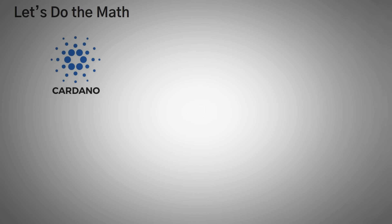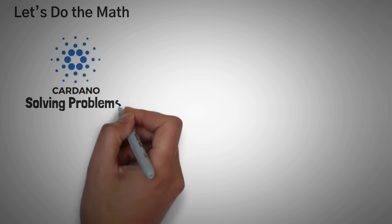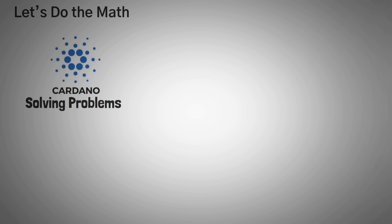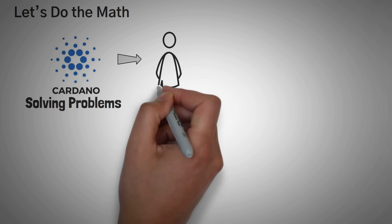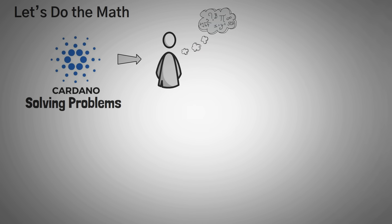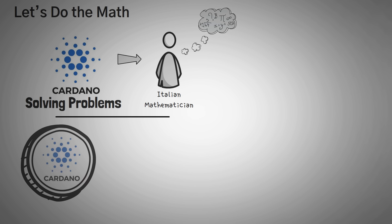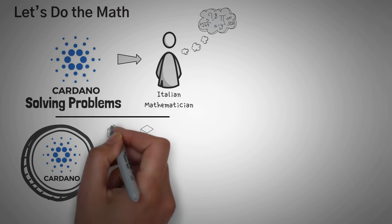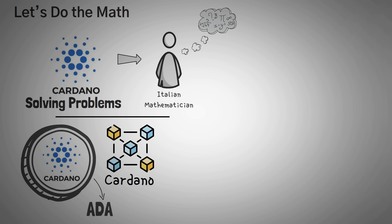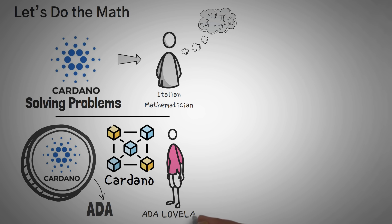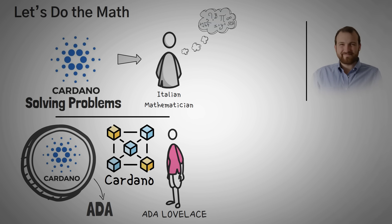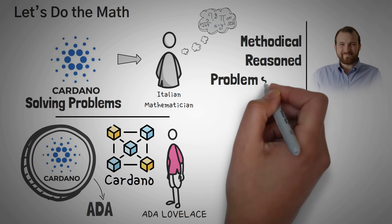You'll notice that Cardano seems to be designed with one thing in mind: solving problems very rationally and logically. This is a project created and run by a man who used to be a mathematician, and this shows up in several ways — namely, the fact that it was named after an Italian mathematician. The token, which actually carries value and is used on the network, is called ADA. So Cardano is the blockchain, and ADA is the coin. Beyond naming conventions, Charles Hoskinson has clearly shown an ambition for tackling big challenges through methodical, reasoned problem-solving.